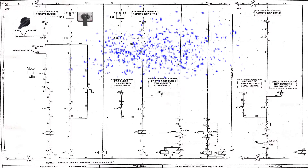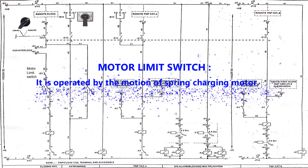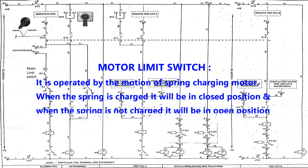Next is the motor limit switch. It is operated by the motion of the spring charging motor. When the spring is charged it will be in closed position, and when the spring is not charged it will be in open position.